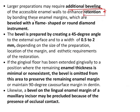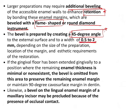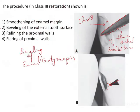If you just see the facts about it. You need a flame-shaped or round diameter instrument. We have seen the flame-shaped bur was used there and 45 degree angle is generally preferred for beveling the enamel margins and the width can be around 0.5 to 2 mm. These are the important things which we have to understand about this particular question.